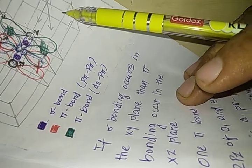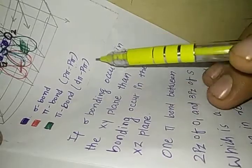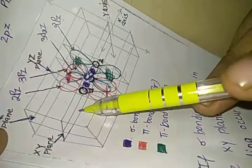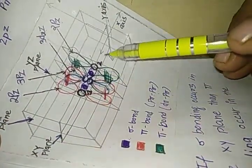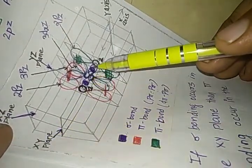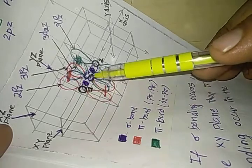Now if sigma bond occurs in the xy plane, you can see this plane is xy plane. This is your xy plane. So you can see that in this plane only this sigma bond takes place.